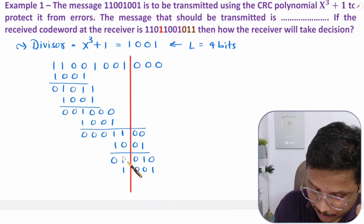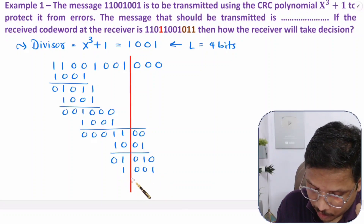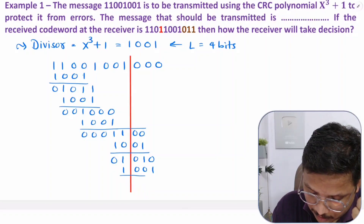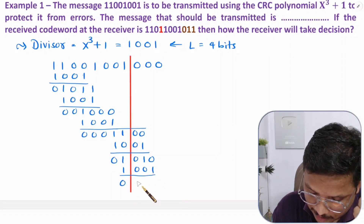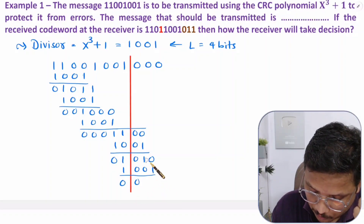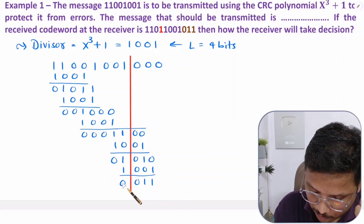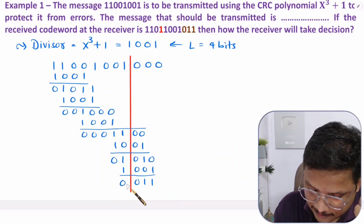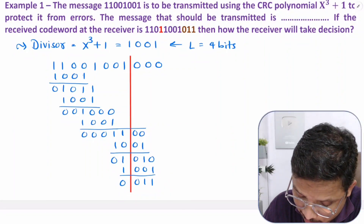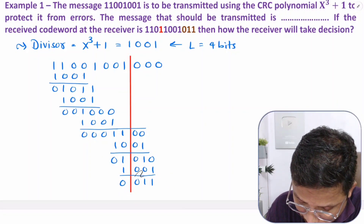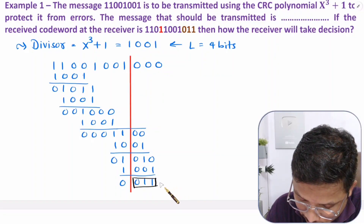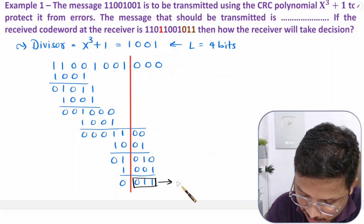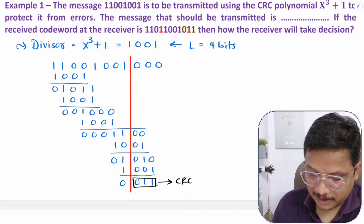We repeat this division until everything on the left side is 0. Here: 1 1 0, then 0 0 0 1 0 1, and 0 1 1. Now everything on this side is 0. So the CRC is 0 1 1.